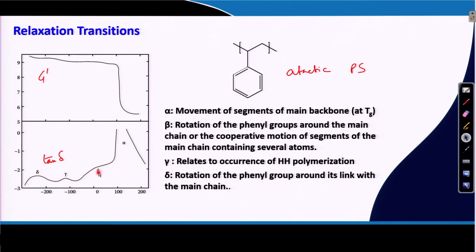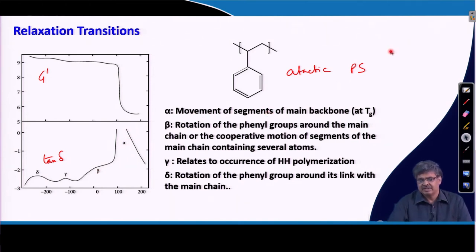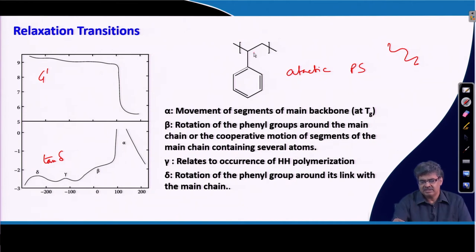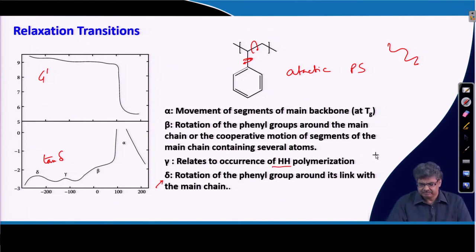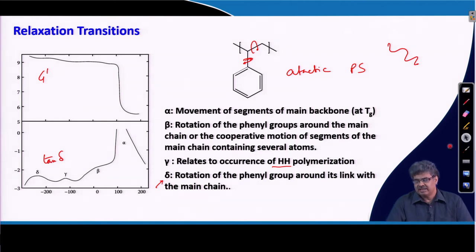The alpha transition corresponds to the glass transition associated with the movement of the polymer backbone segments. The rotation of the phenyl ring around the single bond represents the beta transition. Similarly, rotation of the phenyl ring around a different carbon corresponds to the delta transition. There is another transition which occurs due to head-to-head polymerization. So these relaxation transitions can be captured with dynamic mechanical analysis.